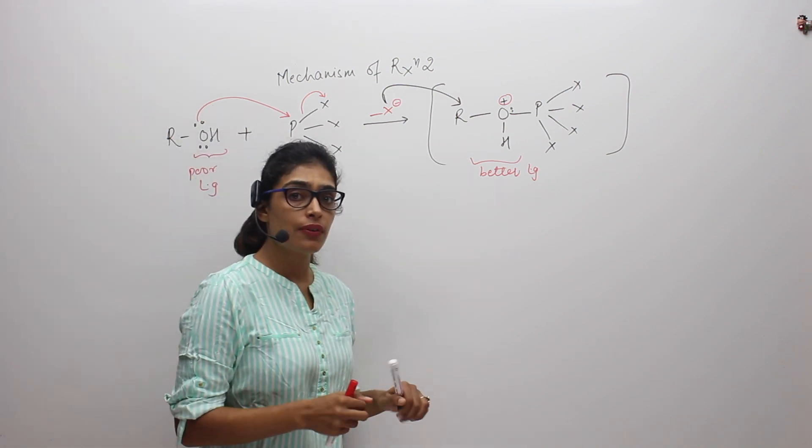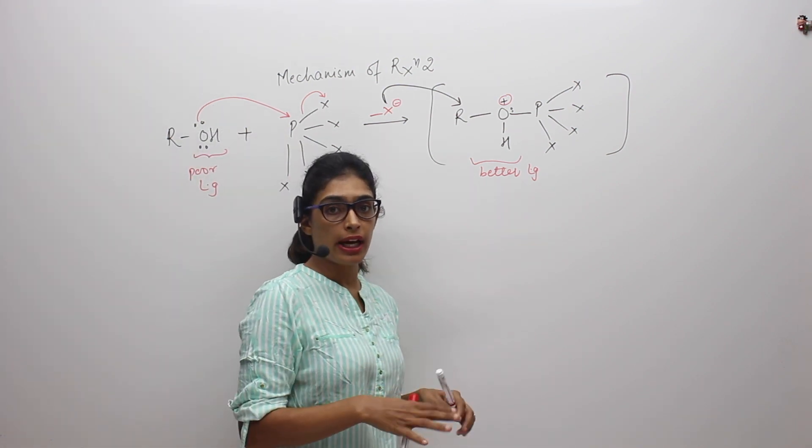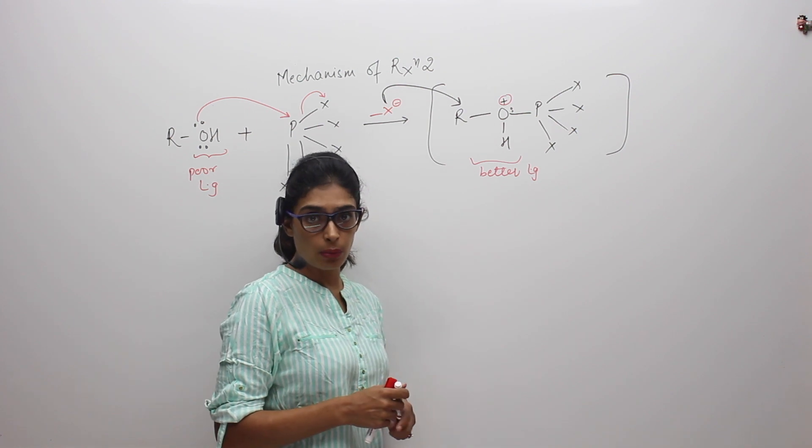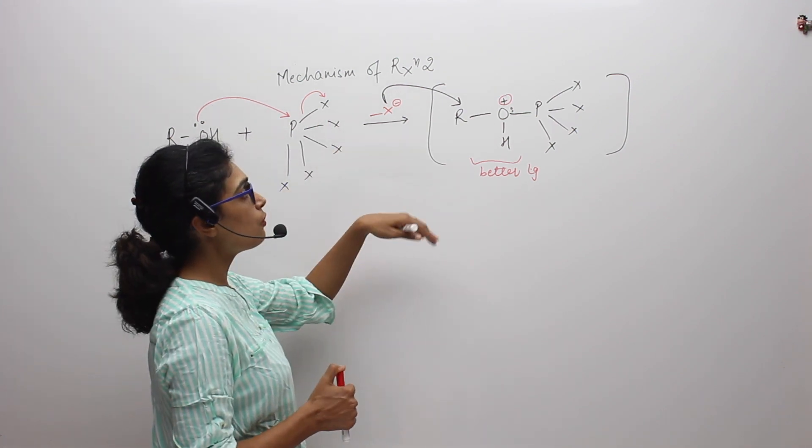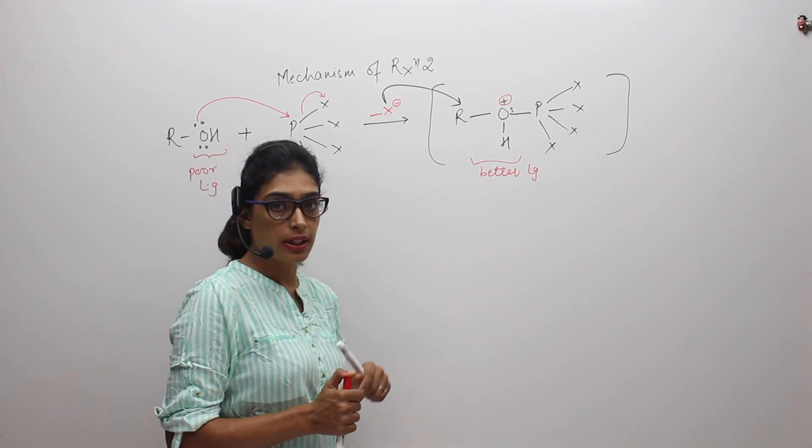Whenever, we already know this, whenever the back attack happens, whenever an incoming nucleophile attacks at the back of a carbon, SN2 reaction takes place. So here the mechanism what X will be following to attack the carbon where oxygen is attached will be SN2.